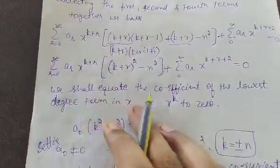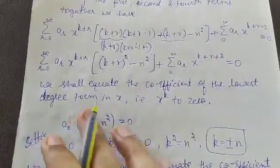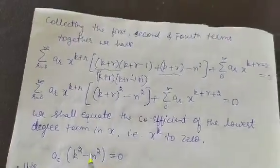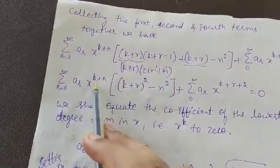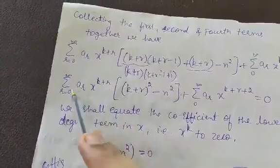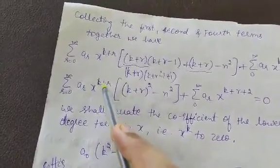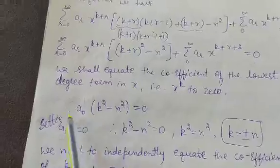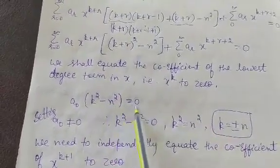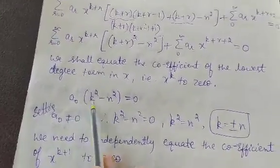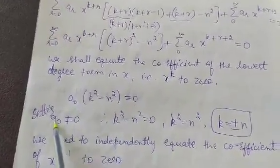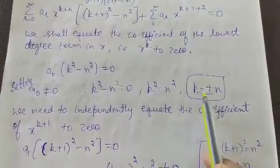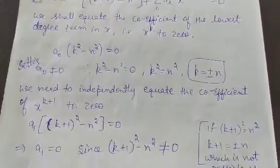We equate the coefficient of the lowest degree term in x, which is x^k (corresponding to r=0), to zero. This gives a₀(k² − n²) = 0. Since a₀ ≠ 0, we get k² − n² = 0, so k² = n², meaning k = ±n. This is called the indicial equation.